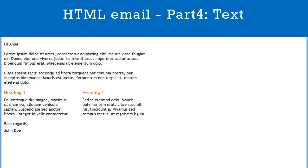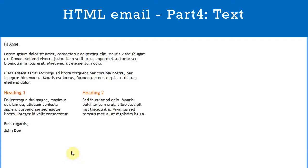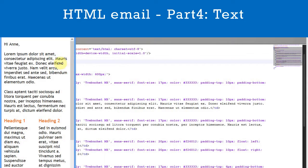Now let's look at the CSS styles. First note the style used for the whole table — we set the table width to 100% and also its max width to 600 pixels. This enables a responsive email. On big screens like laptops and desktops the width of the email will be set to 600 pixels, but on smaller screens such as smartphones the email will adjust to fill 100% of the screen width.